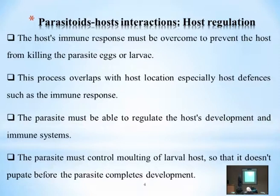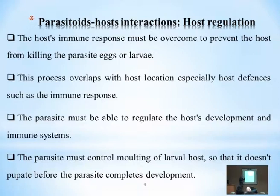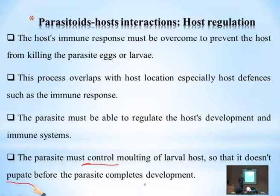The parasite must control molting of the larval host so that it does not pupate before the parasite completes development. Larvae feed and grow and molt until they've gathered enough nutrition to enter the pupal stage. The parasitoid must halt the molting process — it does not want the host to complete development into a pupa, because once pupation occurs, all nutrients inside convert to complex forms that cannot be digested. The parasitoid stops molting so it can complete its life cycle and emerge from the host.